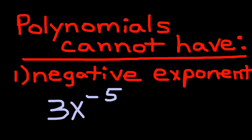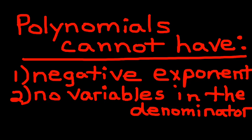Second thing you can't have for it to be a polynomial is you can't have variables in the denominator, which is kind of what that negative did. If you put a variable in the denominator, like 1 over 3x, that cannot be called a polynomial when you do that.